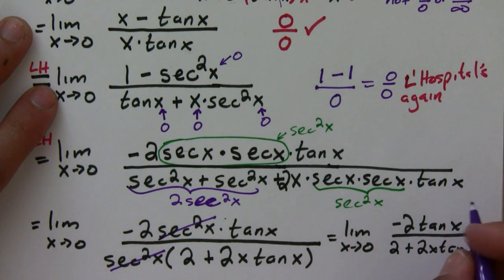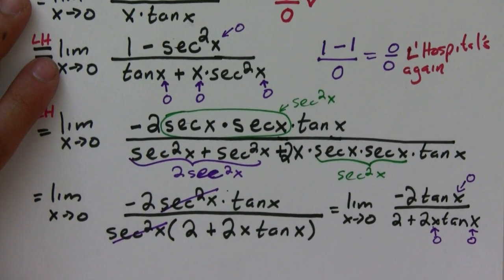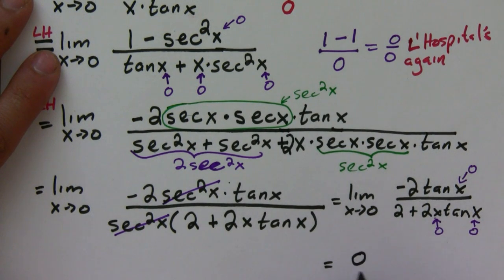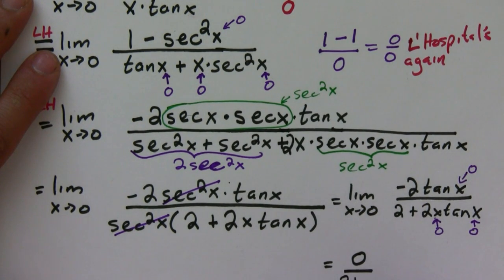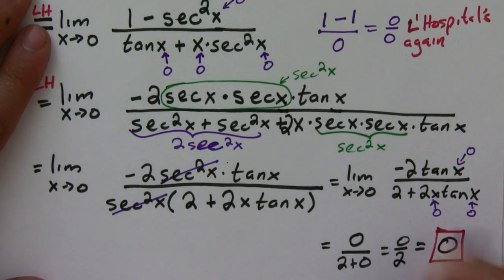Now if I plug in 0: on top, tangent of 0 is just 0, so I get 0. On the bottom, 2 plus 0 is 2. So this is 0 over 2, which is simply 0. And we're done.